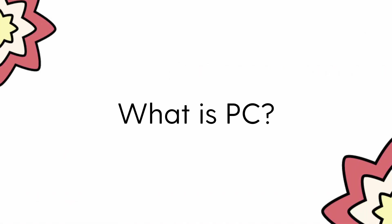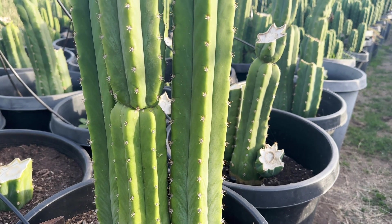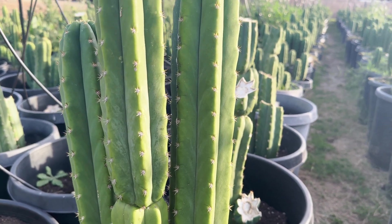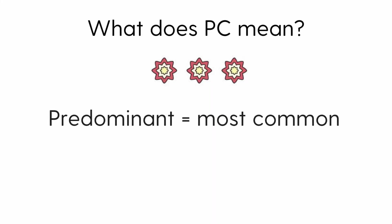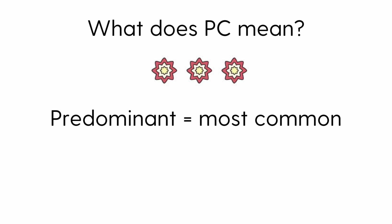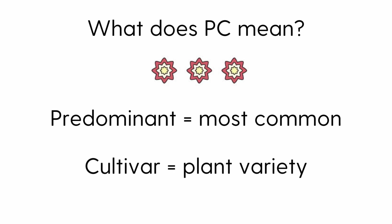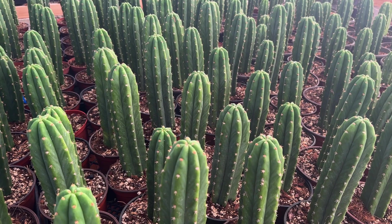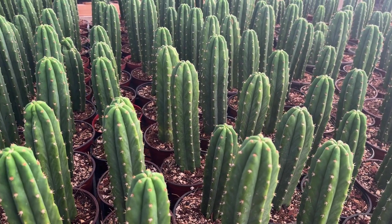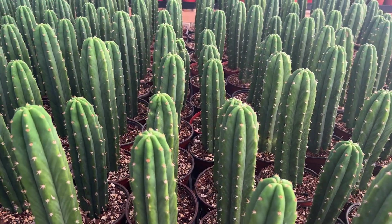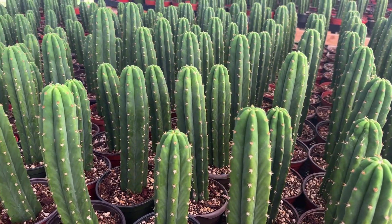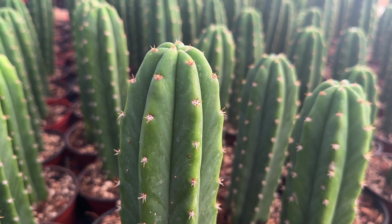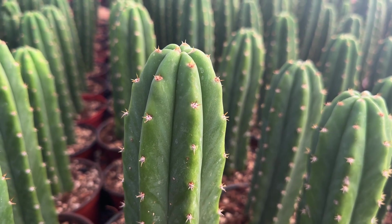What does PC mean exactly? A PC San Pedro is not a politically correct cactus — it's what is called the predominant cultivar. Predominant meaning the most frequent or common, and cultivar meaning a plant variety that has been produced by selective breeding. So the PC San Pedro is just the most common and widespread variety of San Pedro cactus that exists in the United States. It doesn't make it any better or worse than other cacti; it is just very popular.